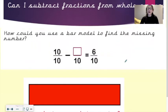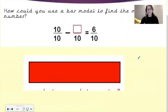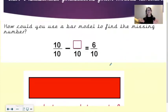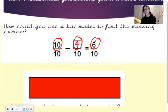How could you use a bar model to find the missing number? So have a little think about how we can do this. Can you tell me the missing number here? We have 10 tenths take away something tenths equals 6 tenths. What would be the answer? It would be 4, because 10 take away 4 would give you 6. So that's how you work out the missing numbers there. You figure out what number you have to take away from 10 in order to get 6.